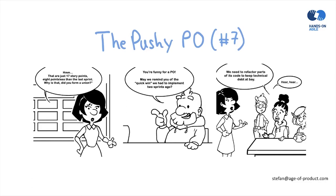Nevertheless, this should be something that the Scrum Master addresses. You should talk about it in a retrospective, because it creates a lot of tension in the team and it's really undermining the trust that the team needs to be successful. So please: no pushy Product Owners.